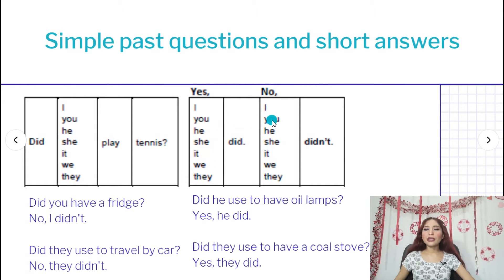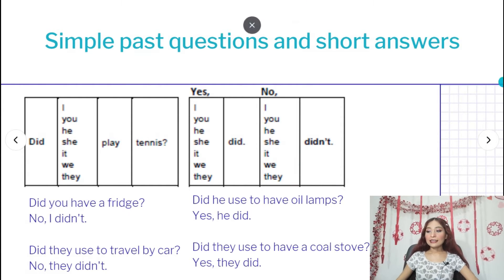But what about if we want to answer with a negative short answer? We will say no I didn't, no you didn't, no he didn't, no she didn't, no it didn't, no we didn't, no they didn't. Okay? And that's it.